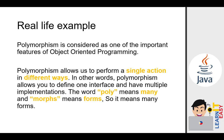Polymorphism is considered one of the important features of object-oriented programming. It allows us to perform a single action in different ways. In other words, polymorphism allows you to define one interface and have multiple implementations. 'Poly' means many and 'morphs' means forms — so it means many forms.